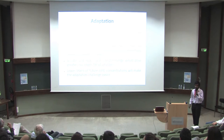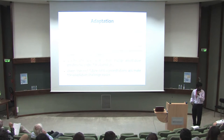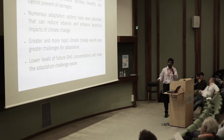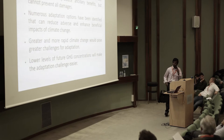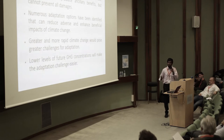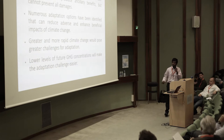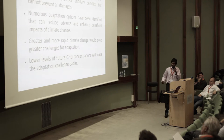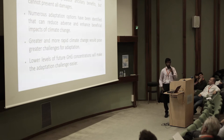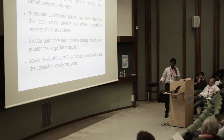But they also mentioned that it cannot prevent all damages. As Paolo said, in the oceans for the next 80 years, you can't make any change through adaptation and mitigation alone. There are numerous adaptation options, but more rapid climate change would pose great challenges to them. By lowering greenhouse gas concentrations, we can make adaptation challenges easier.